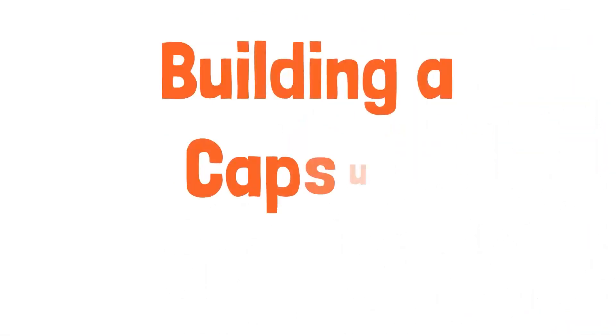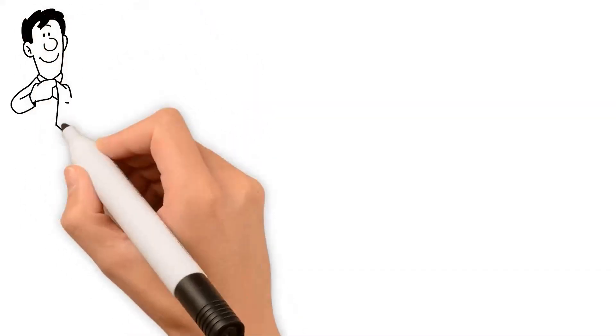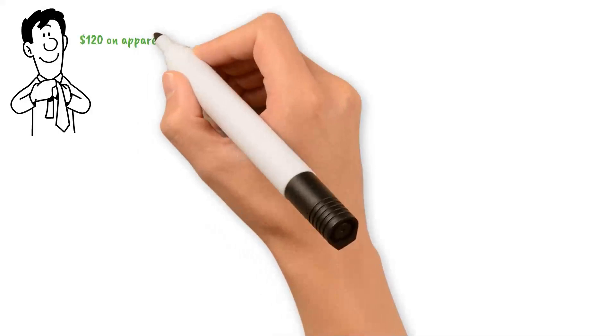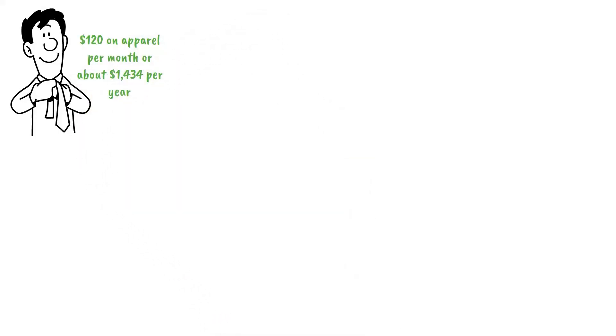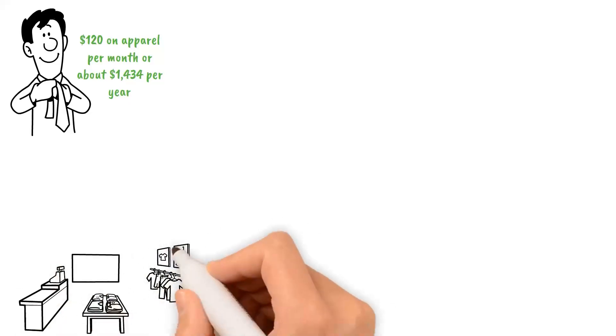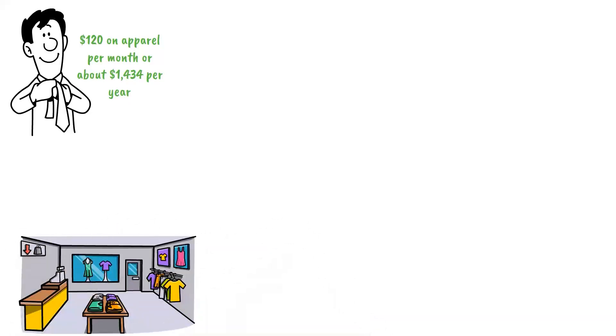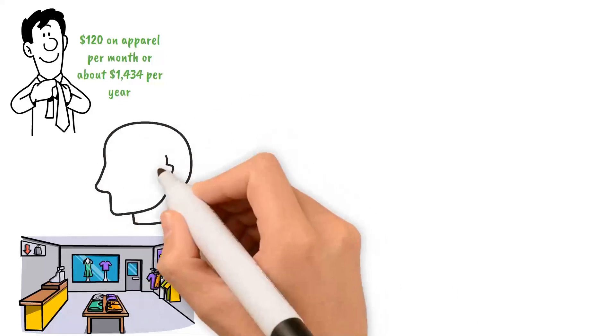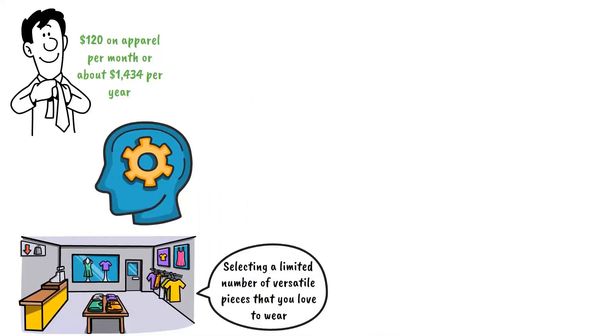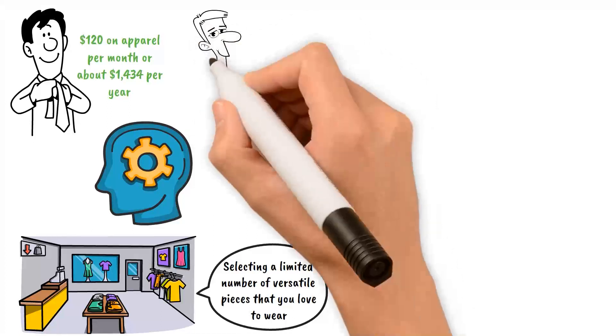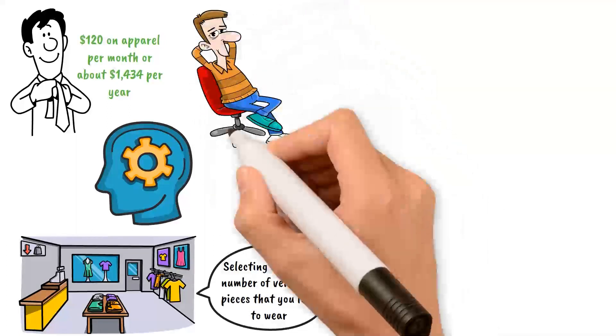Building a capsule wardrobe. Clothing expenses can significantly impact our budget. The average American household spend approximately $120 on apparel per month, or about $1,434 per year. Building a capsule wardrobe is a minimalist approach that can help cut down these costs considerably. A capsule wardrobe involves carefully selecting a limited number of versatile pieces that you love to wear. This not only reduces the number of items in your closet, but also simplifies the decision-making process of what to wear each day. Imagine the time, stress, and money saved when you don't have to worry about keeping up with the latest fashion trends.